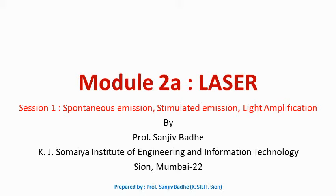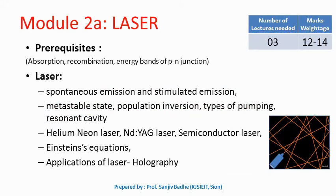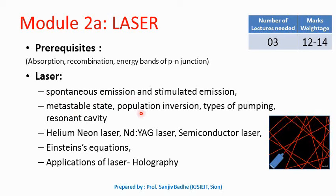Module 2 is lasers and optical fibers. We are dividing it into two parts. The first part will be lasers. Discussion on lasers may take around three sessions and marks allotted will be 12 to 14. Pre-requisites required: we need to know what is absorption, recombination, what are the energy bands of P-N junction. We will be discussing spontaneous emission, stimulated emission, metastable state, population inversion, different types of pumping methods, meaning of resonant cavity and role of resonant cavity. Then we will get introduced to various laser systems: helium neon laser, Nd:YAG laser, semiconductor laser — based on construction and working. Then we will obtain Einstein's equations and discuss some applications of lasers. Holography will be discussed as an important application.